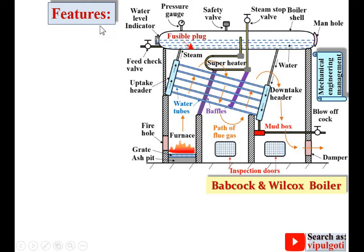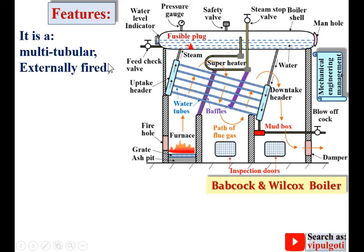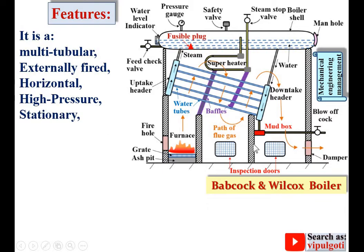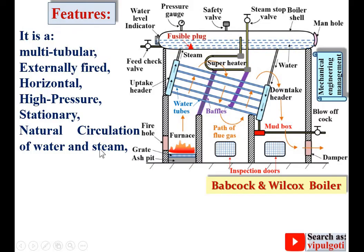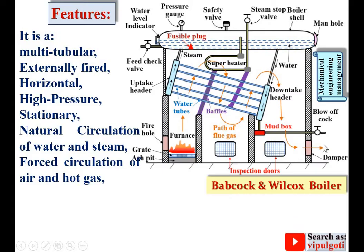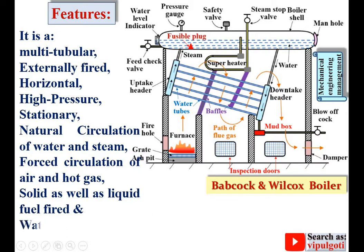First, the features. It is a multi-tubular boiler, as you can see there are a number of tubes. It is an externally fired boiler because the fire is outside of the boiler shell. The boiler shell is in a horizontal position, so it is called a horizontal boiler. It is a high-pressure boiler and a stationary boiler — it cannot move from one place to another. There is natural circulation of water and steam due to density difference, and forced circulation of air and hot gases via a chimney that creates pressure to move the flue gases. It is solid as well as liquid fuel fired, and it is a water tube boiler because water is inside the tubes and flue gases are outside.